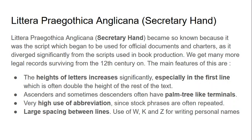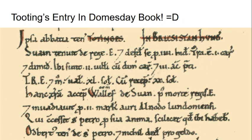The features of secretary hand are: increased heights of letters, especially ascenders and descenders, and especially in the first line which usually doubles the height of the rest of the text. These ascenders and descenders often have little palm-tree-like terminals. They use a lot of abbreviation because charters are formulaic in language with repeating stock phrases, so nobody needs to write out stereotype legal terms in full. You also get a lot of spacing between lines and the use of W and Z for writing personal names from vernacular languages.